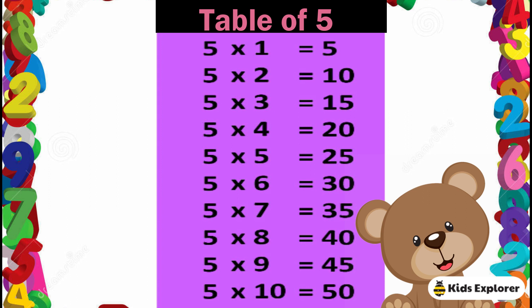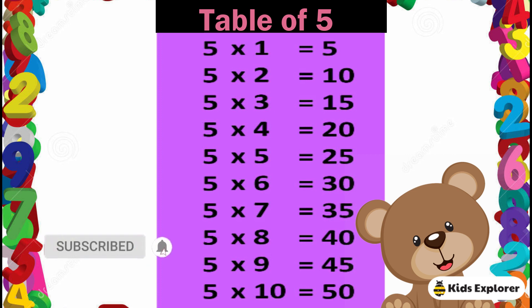Table of 5. 5 5's are 25, 5 6's are 30, 5 7's are 35, 5 8's are 40, 5 9's are 45, 5 10's are 50.